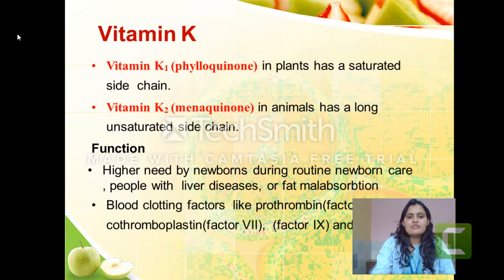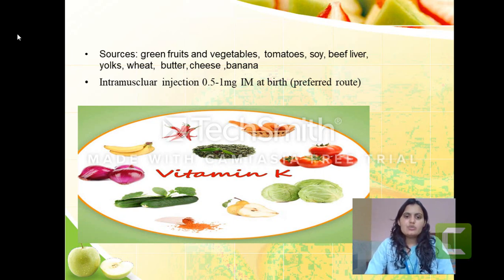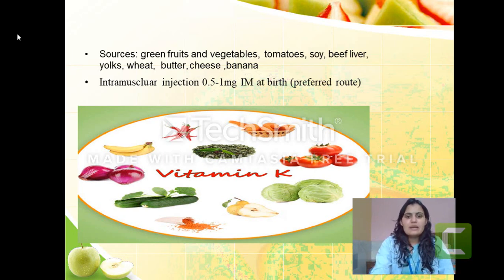Vitamin K is given to newborns as part of routine newborn care to prevent bleeding. The sources are green fruits, vegetables, tomato, beef liver, egg yolk, and wheat. The dose ranges from 0.5 to 1 mg, with the preferred route being IM. For preterm babies the dose is 0.5 mg; for term babies it is 1 mg. It is given at birth because the liver is immature in newborns.